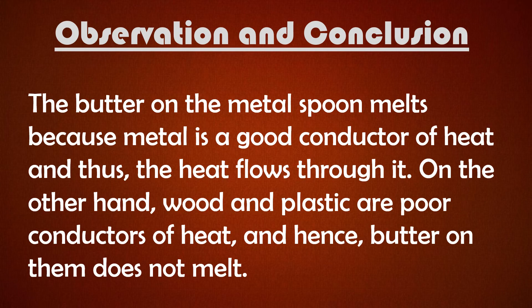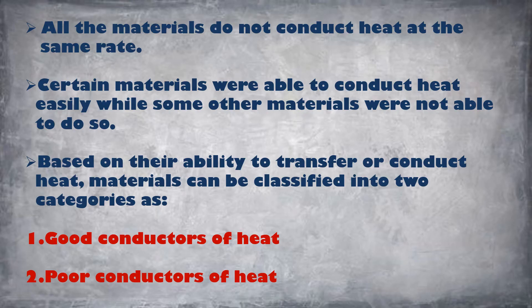You will observe that the butter on the metal spoon melts. This is because metal is a good conductor of heat and thus heat flows through it. On the other hand, wood and plastic are poor conductors of heat, and hence the butter on them does not melt. From this activity you will find that all materials do not conduct heat at the same rate. Based on their ability to conduct heat, materials can be classified into two categories: good conductors of heat and poor conductors of heat.